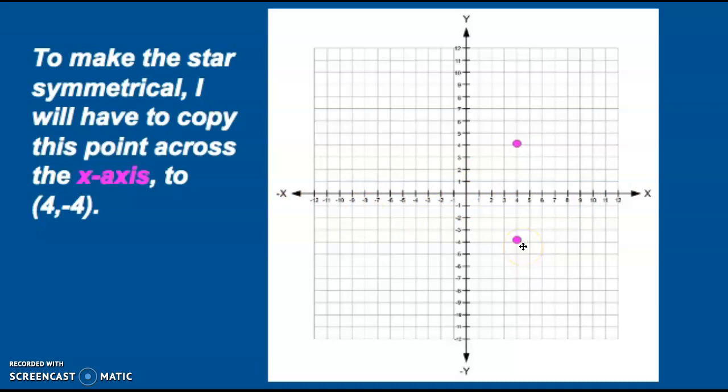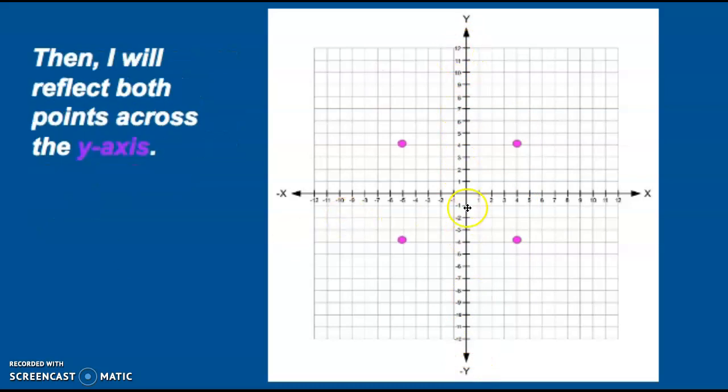Now I want to reflect both these points across the y-axis. Let's see where they go. Well, my point at (4,4) is reflected across the y-axis at (-4,4), and my point at (4,-4) is reflected across the y-axis at (-4,-4).